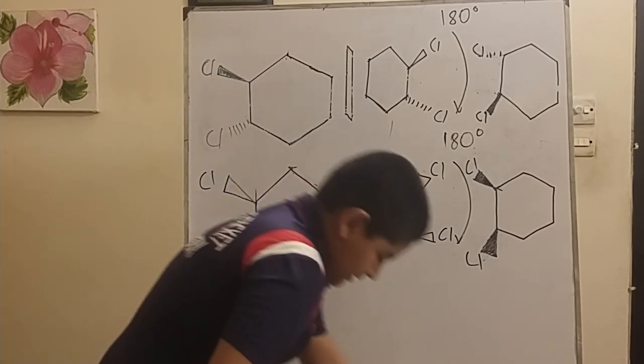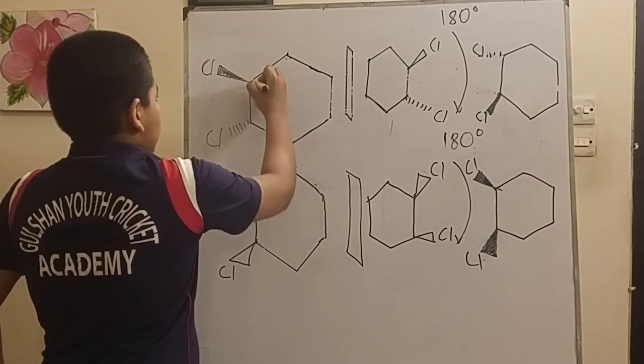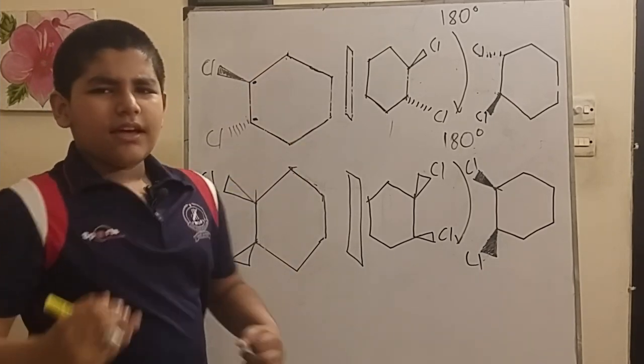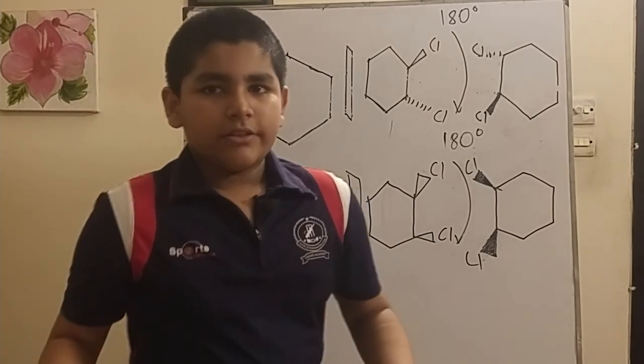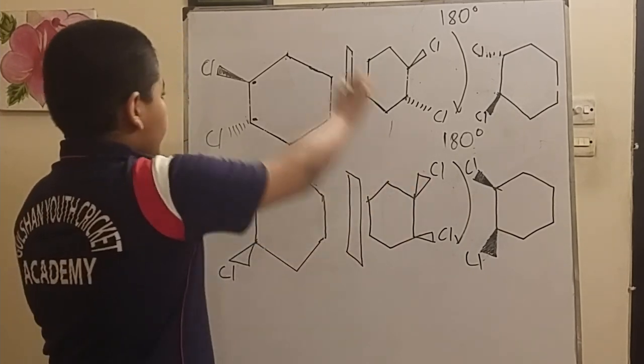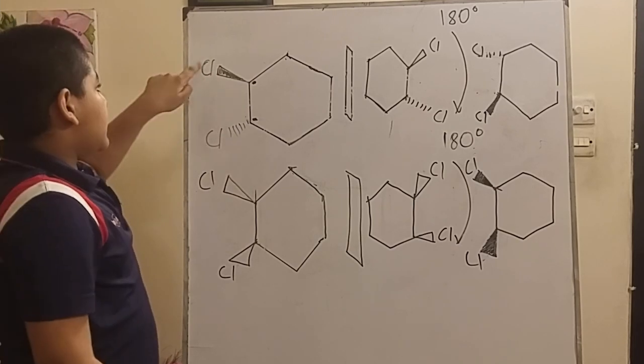If a compound has two chiral centers, as with this one, then we're going to have to investigate further on whether this is chiral or achiral. Now I've got an example right here.